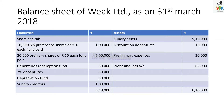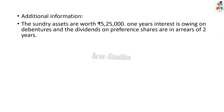Let us start the problem with this balance sheet of Week Limited as on 31st March 2018. The liability side is there, asset side is there, and then here 10,000 6% preference shares of Rs. 10 each, and then 30,000 ordinary shares of Rs. 10 each, fully paid both are.